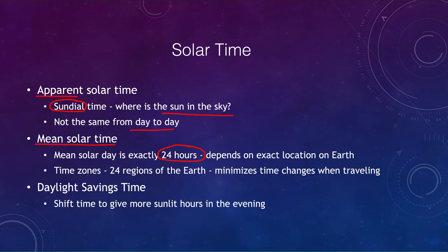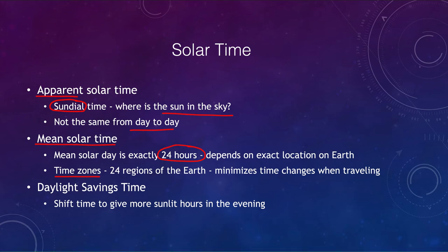We also divide the earth into time zones. If you've traveled, you know that moving further west you set your clocks backward, and moving east you set them forward, because you're changing time zones. Time zones minimize the amount of change required when traveling, because apparent solar time would otherwise change based on your location. Two cities relatively close together would have slightly different times under apparent solar time, but we average them together — so much of the eastern United States, whether you're in New York or Detroit, both use eastern time. It's not until you travel further west to Chicago that the time shifts back an hour.